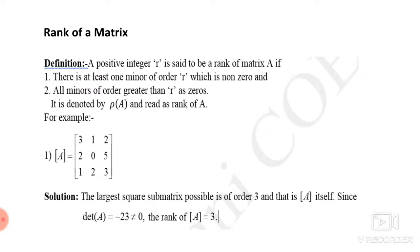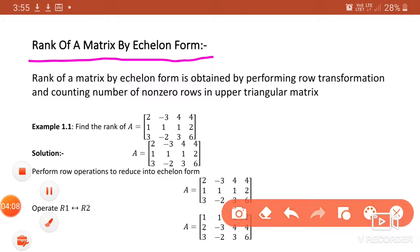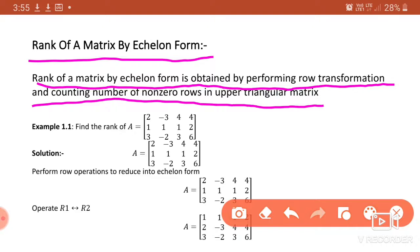Now we study rank of a matrix by echelon form. We are going to study rank by two methods: one is by normal form and another is by echelon form. Echelon form means we only use row transformations and count the number of non-zero rows. Rank by echelon form is obtained by performing row transformations and counting the number of non-zero rows in upper triangular form.